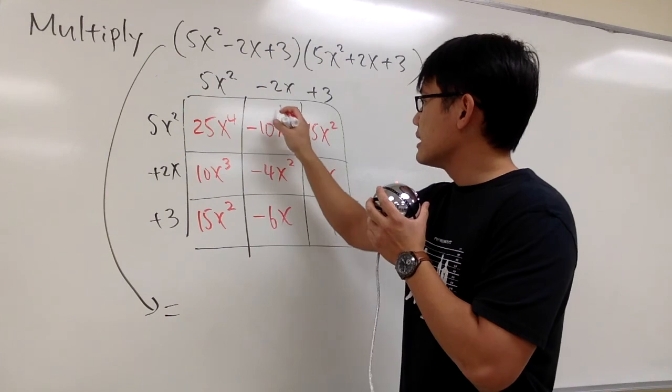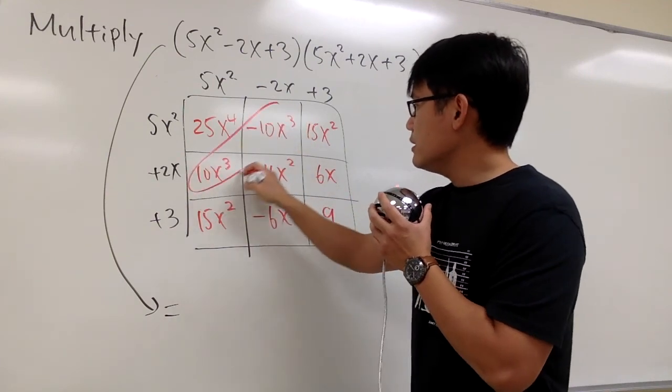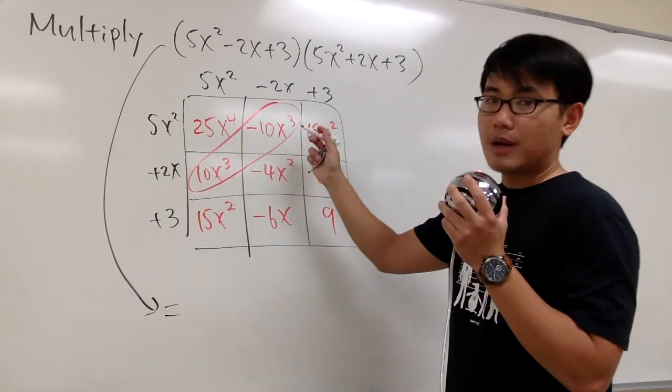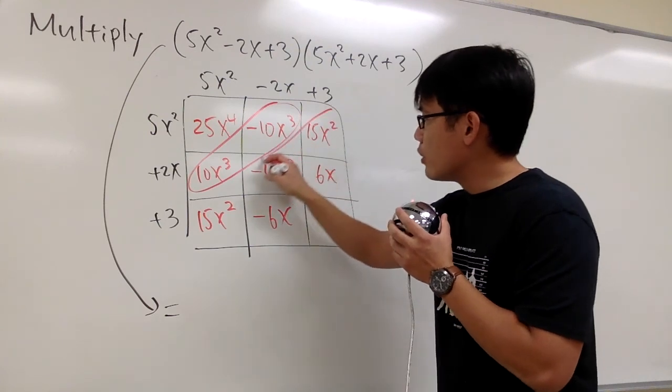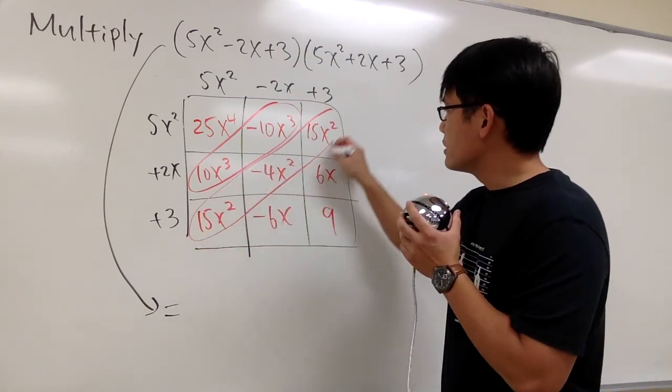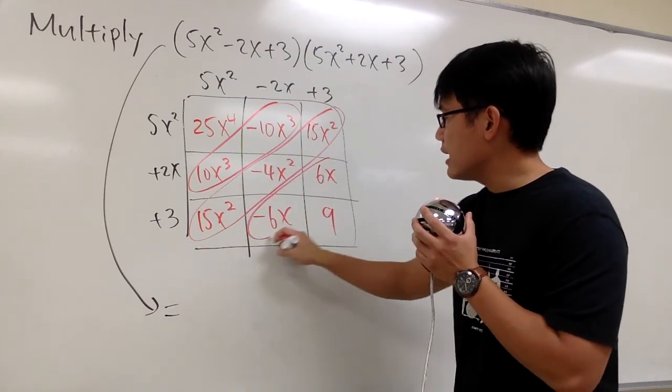So, you see that right here, these two are the x to the third power terms. And then this diagonal is the x² terms. And then for this right here, it's the x terms.